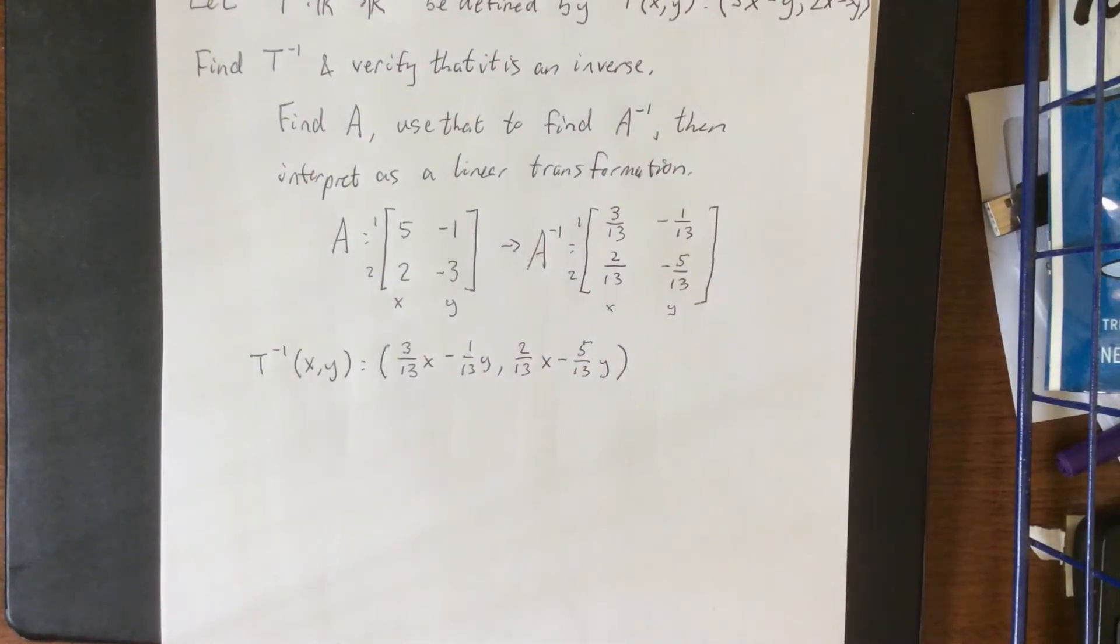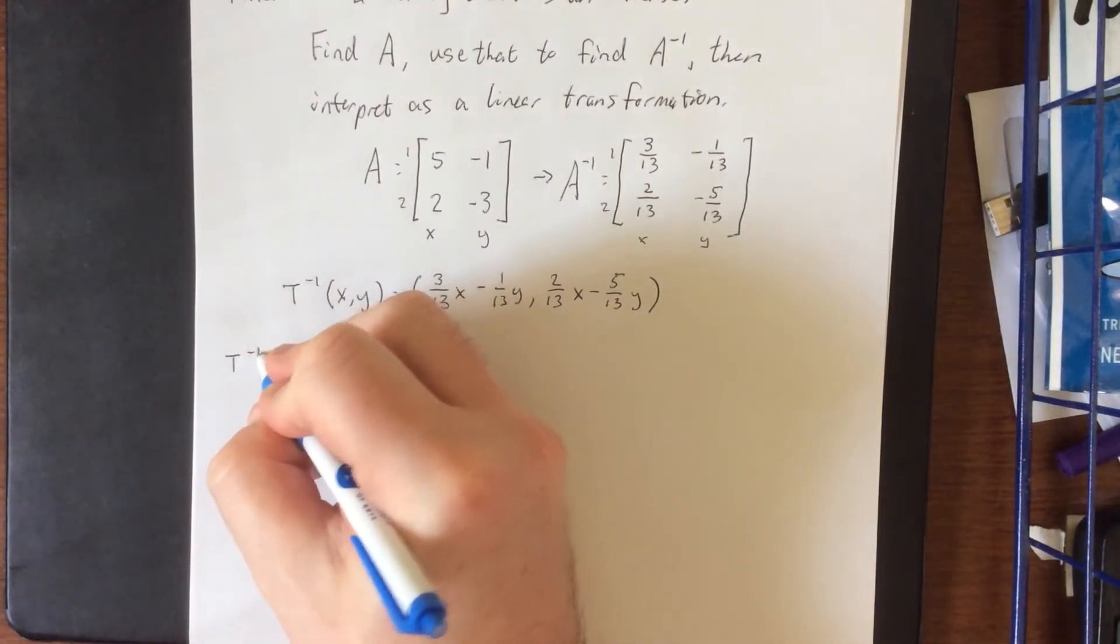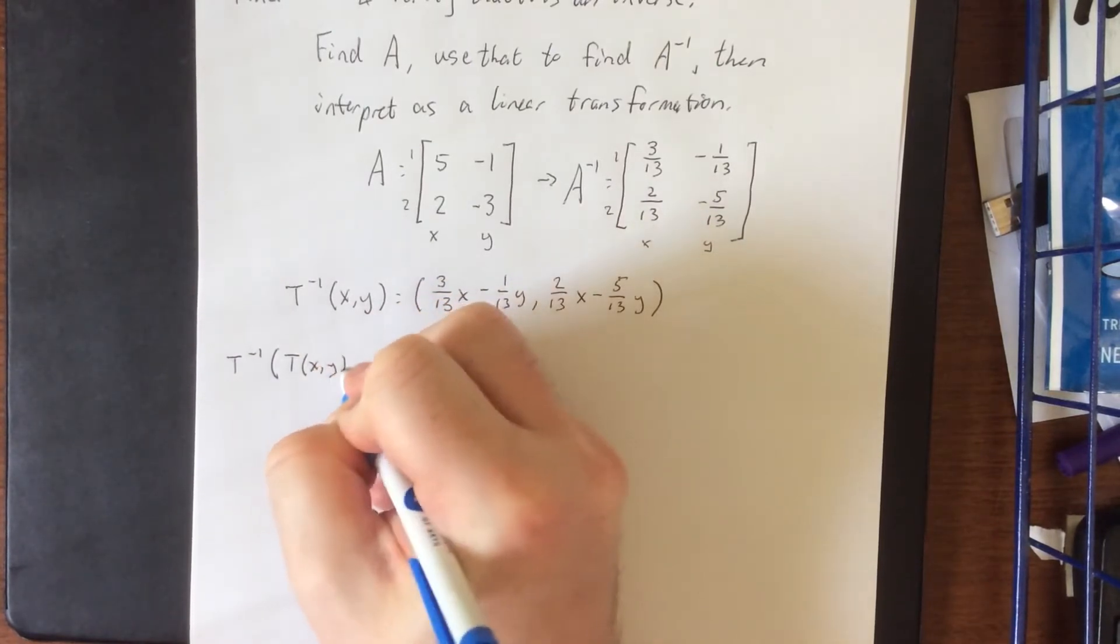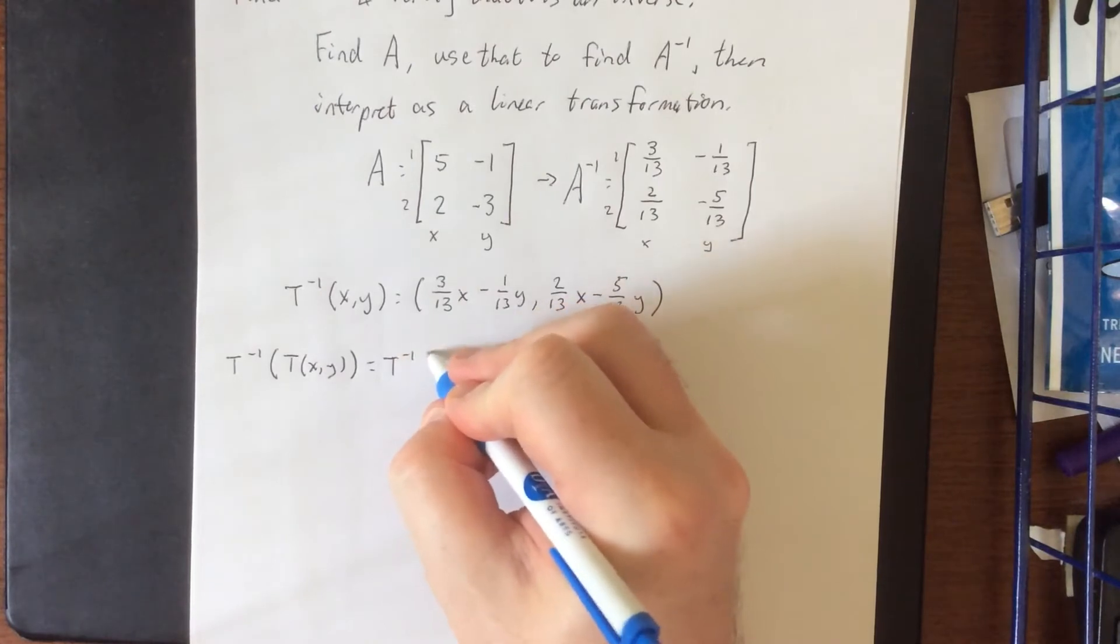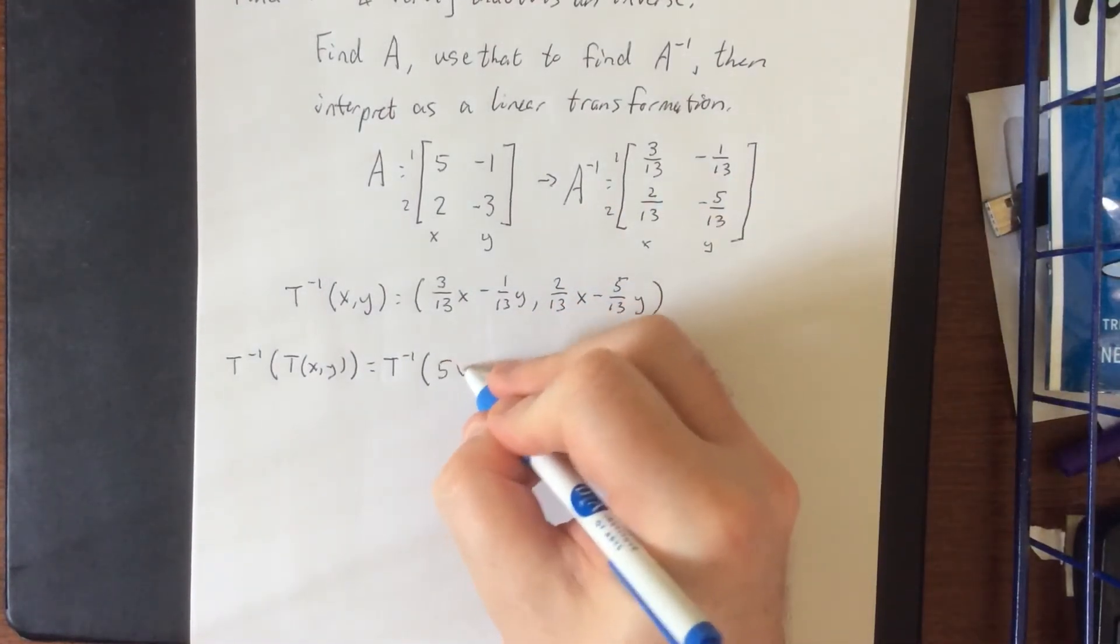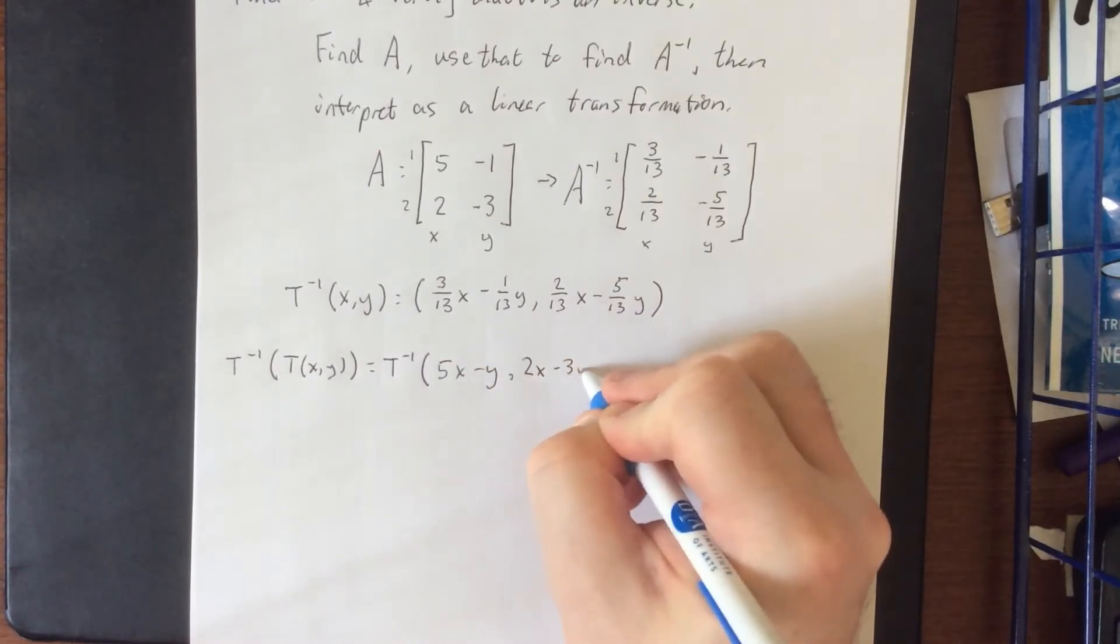Now to verify that these are in fact inverses of one another, what we're going to do is take the composition of T inverse of T(x,y). So it'll be T inverse of T(x,y), which we had defined previously to be 5x minus y and 2x minus 3y.